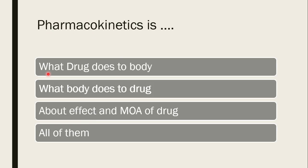Next question: pharmacokinetics is — what drug does to body, what body does to drug, effect and mechanism of action, or all of them? The correct answer is what body does to drug. When a patient takes the drug, the body absorbs it, distributes it into body fluid compartments, metabolizes it, and then excretes the unwanted part. So pharmacokinetics is body to drug.